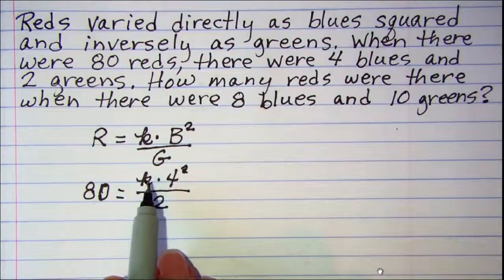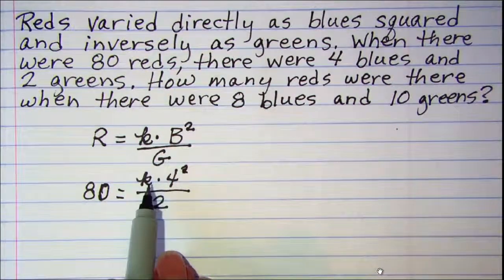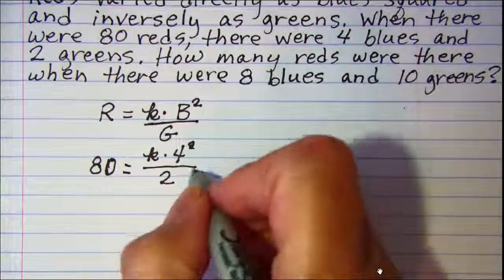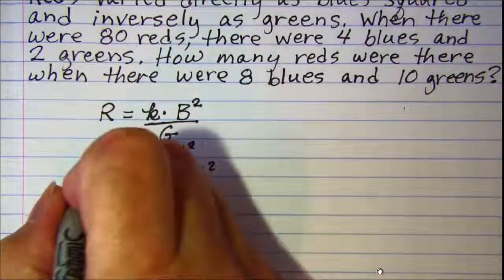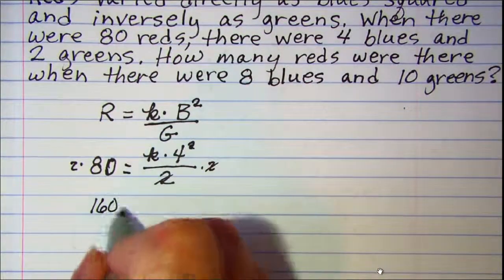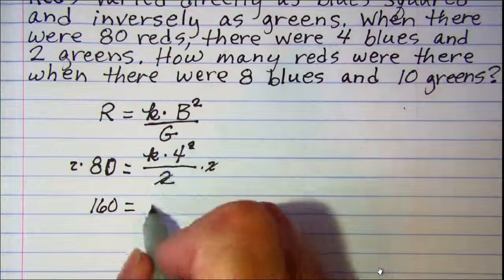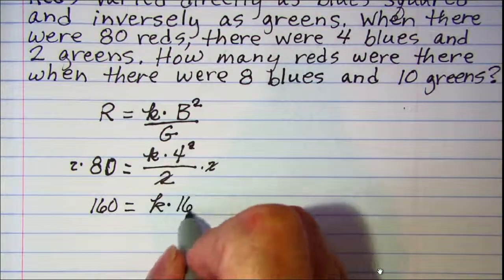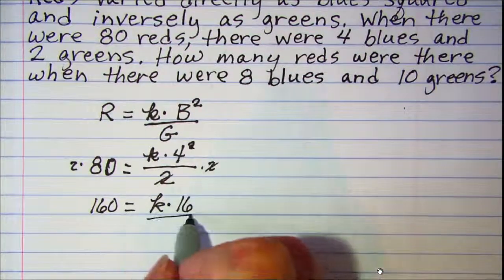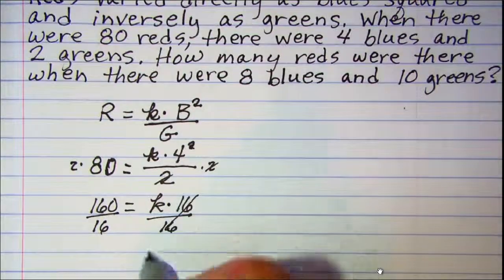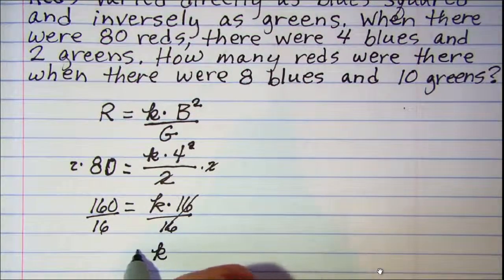Now my equation only has this one variable so I can solve it for K. Let's multiply both sides by 2 to get this 2 off of here. So I have 160 on the left side equals K times 4 squared is 16. Divide both sides by 16 and K is equal to 10.